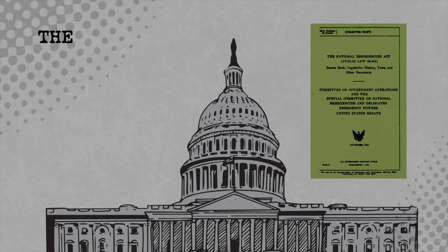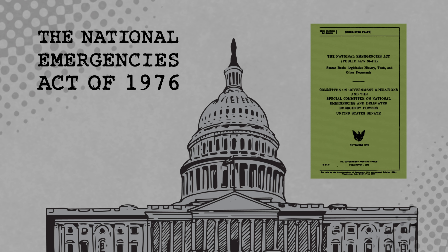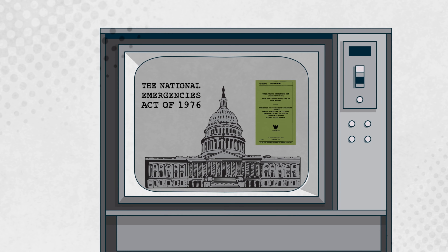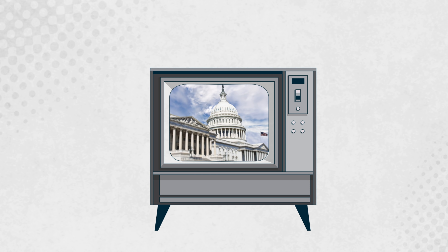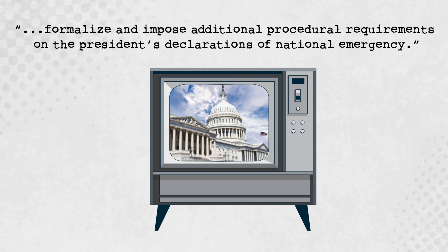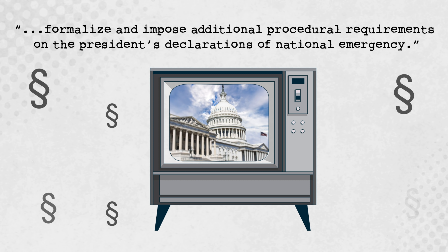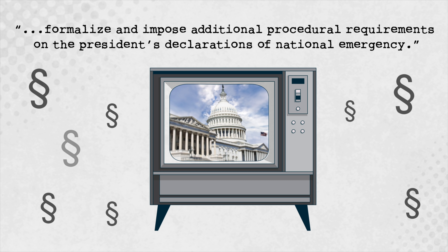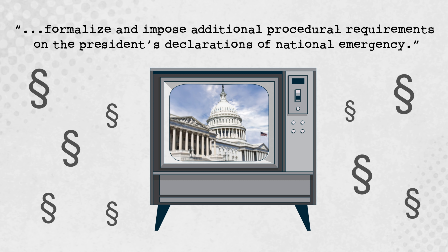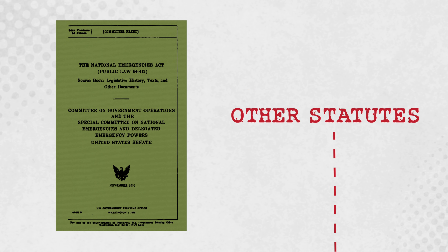When Congress passed the National Emergencies Act in 1976, it did not affirmatively grant the president any emergency authority. Instead, Congress was attempting to formalize and impose additional procedural requirements on the president's declarations of national emergency. At that time, many existing statutes allowed the president to declare a national emergency to trigger expanded emergency powers. All of these powers are constrained primarily by norms, public opinion, and the threat of congressional oversight in extreme cases.